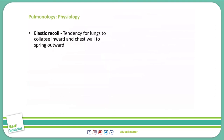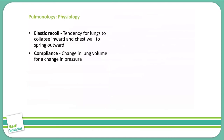We also use the term compliance in regard to the lung. Compliance is the change in lung volume for a particular change in pressure. If we increase compliance, it makes our lungs easier to fill. If we decrease compliance, it makes our lungs harder to fill. Examples of increased compliance include emphysema and aging.